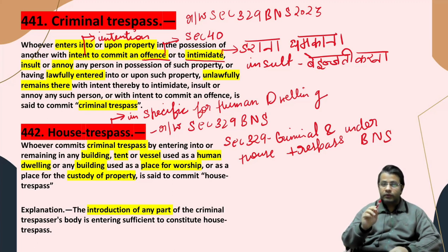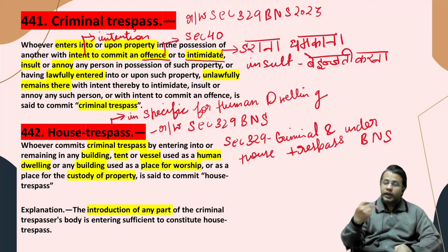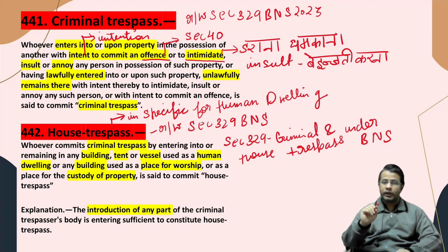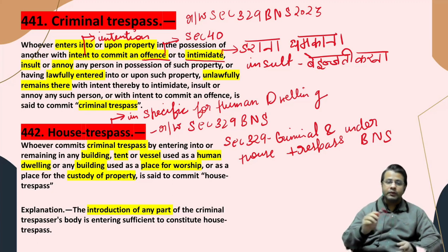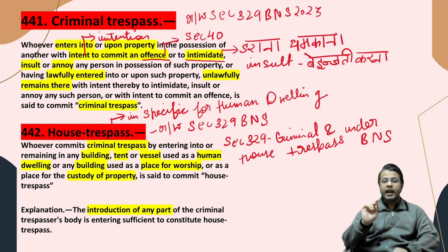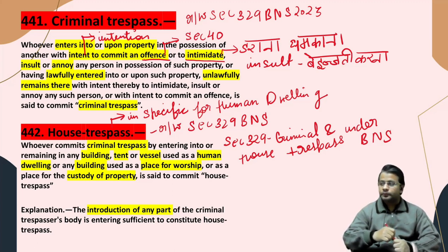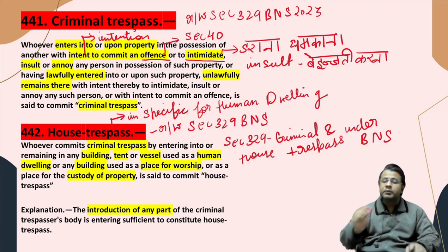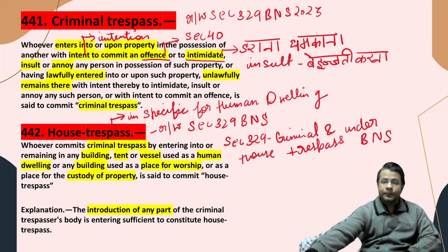इसमें हम लोग Section 329 Bharatiya Nyaya Sanhita भी revise करेंगे। Under BNS 329, criminal and house trespass के बारे में दोनों को एक साथ cover किया गया है नए वाले code में। इसकी explanation: the introduction of any part of the criminal trespasser's body is entering sufficient to constitute house trespass। Any part in the sense — for example, मैंने बस वो जो एक सीमा है, एक दहलीज है, उसके आगे बस अपना एक पैर भी बढ़ा दिया, तो वो house trespass की category में आ जाएगा।